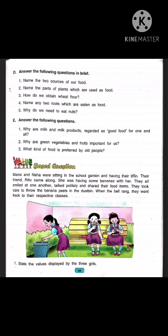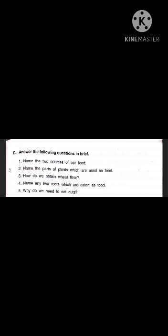Let's read question number 1: Name the two sources of our food. For this answer, let's read page number 58, line number 3rd: We have already learnt in class 2 that we get our food from plants and animals. So children, we will write the answer like: the two sources of our food are plants and animals.